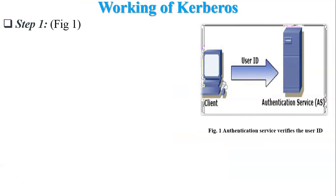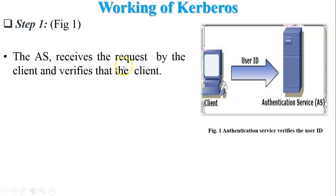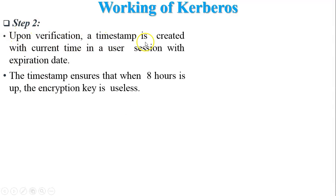Working of Kerberos. Step 1: Authentication service verifies the user ID. The authentication server receives the request from the client and verifies the client ID. The client provides their user ID to the authentication server. Step 2: Verification — a timestamp is created with the current time in a user session with an expiration date. The timestamp ensures that when eight hours is up, the encryption key becomes useless. This timestamp is included in the ticket used to access the Ticket Granting Server and other servers.